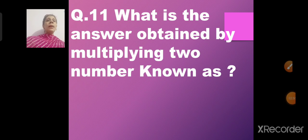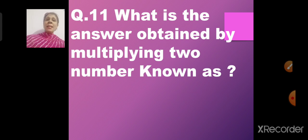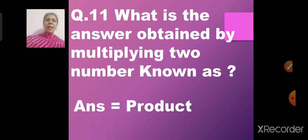Question number 11: What is the answer obtained by multiplying two numbers known as? The answer obtained by adding two numbers is the sum, subtracting gives the difference, and multiplying two numbers gives us the product.